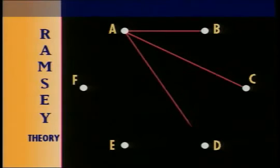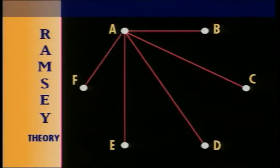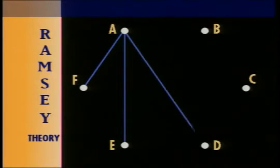Start with six points and label them A through F. From any one point, there are only five lines extending to the other points. If the lines can only be red or blue, no matter how hard you try to avoid it, at least three of them must be the same, either red or blue.